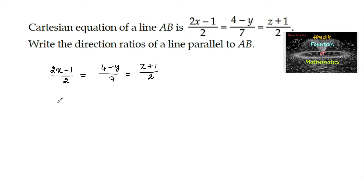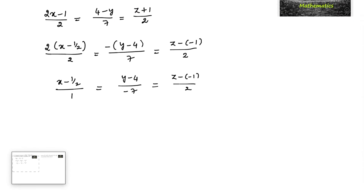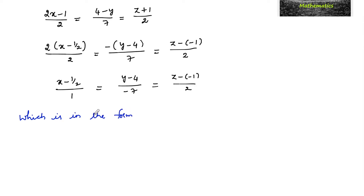We can rewrite this equation by taking 2 common: (x - 1/2)/1 = (y - 4)/(-7) = (z - (-1))/2. This brings the equation into the standard form (x - x₁)/a = (y - y₁)/b = (z - z₁)/c.